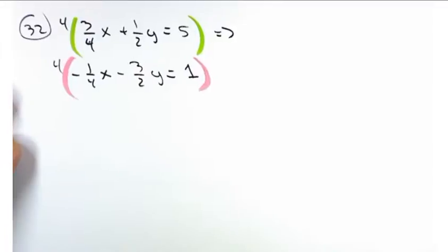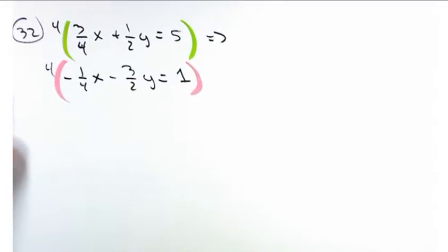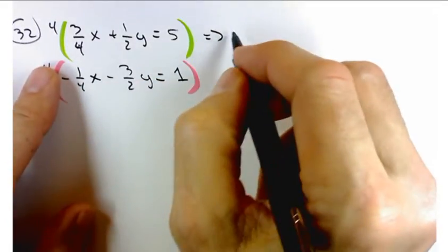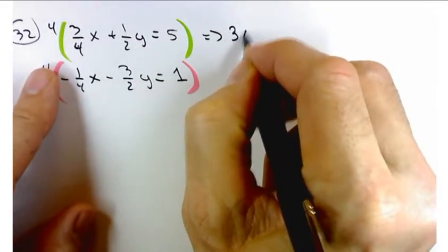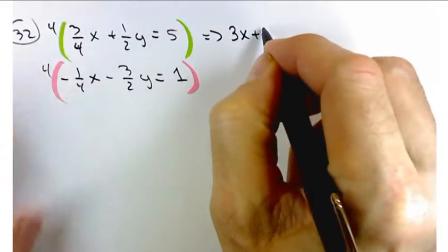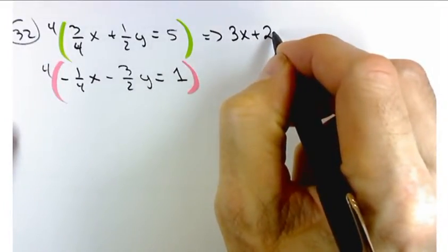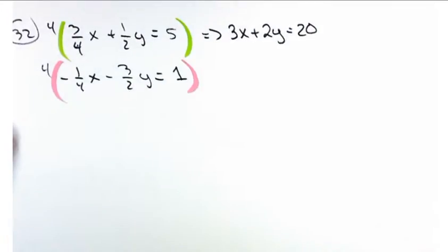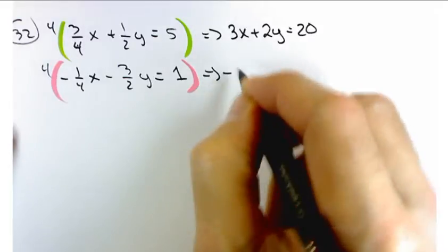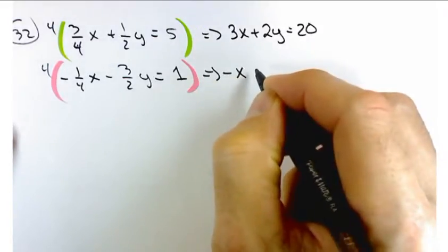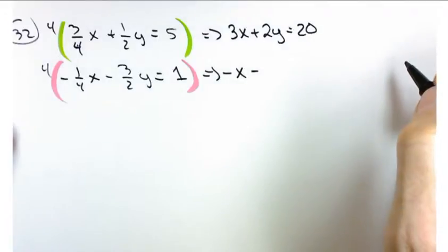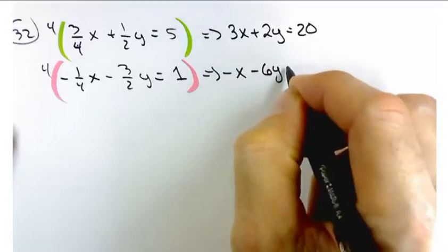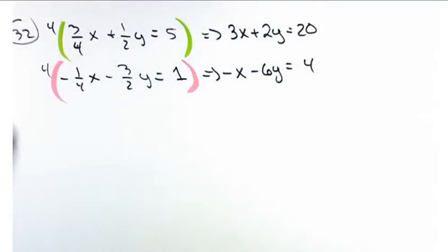What equation does that give me when I multiply everything by 4? It's going to be 3x plus 2y equals 20. And then it's going to be minus x minus 6y equals 4. Perfect.